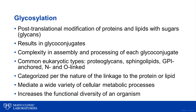Glycans are categorized according to the nature of linkage to the protein or lipid, and some common eukaryotic glycans include proteoglycans, sphingolipids, GPI-anchored glycoproteins, and N-linked and O-linked glycoproteins.